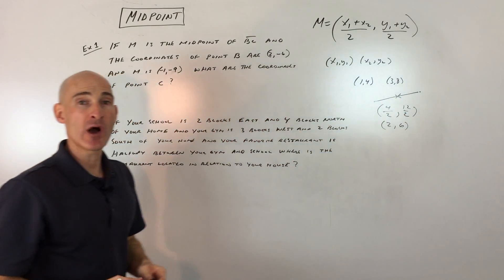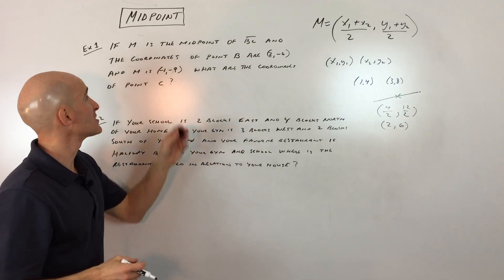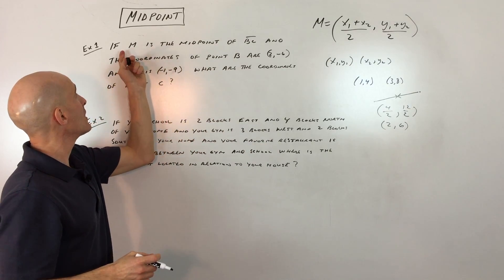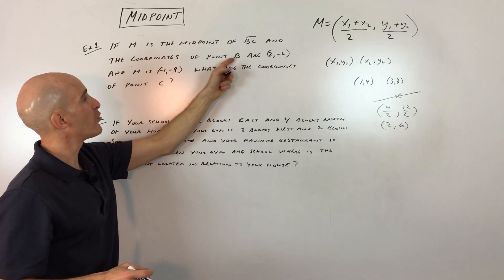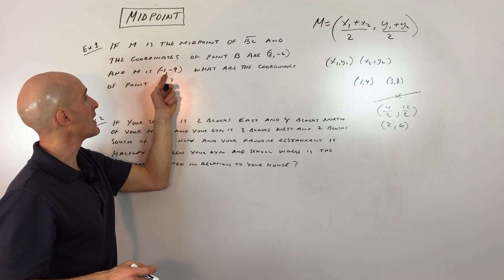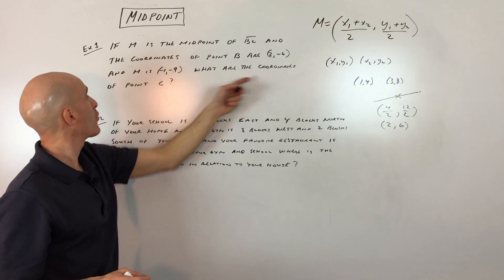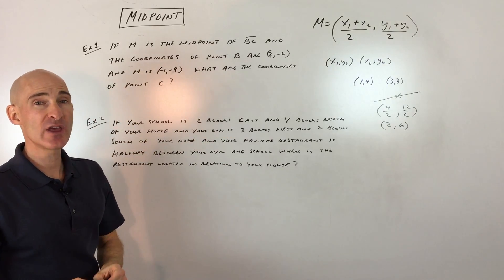Let's do a couple examples. Go ahead and pause the video so you can practice on your own, and then we can do these together. If M is the midpoint of segment BC, and the coordinates of point B are 2, negative 6, and the coordinates of point M are negative 1 and negative 9, what are the coordinates of point C? That's the other endpoint. See if you can do that one on your own.